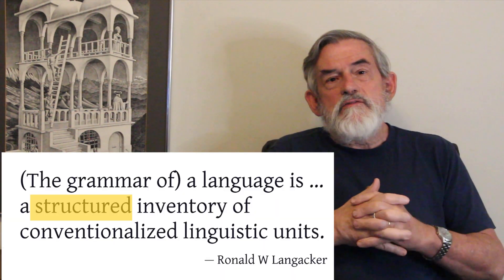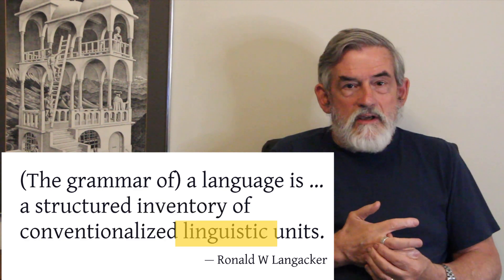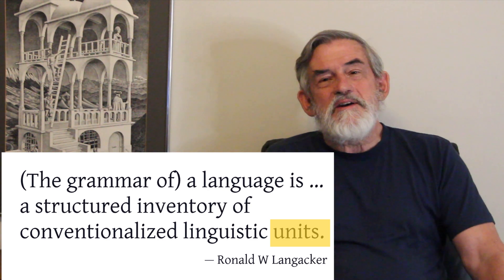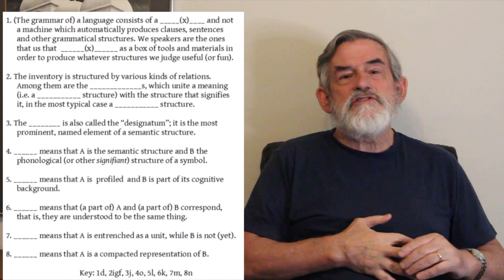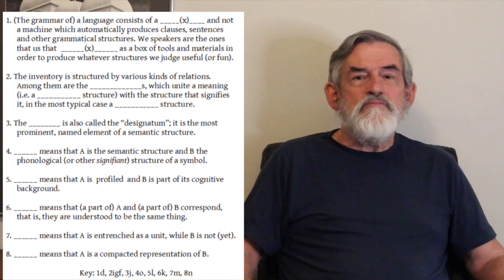All of these relationships — the relationships of association, of identity, of symbolization — structure the inventory. So a language is composed of a structured inventory of conventionalized linguistic units. I hope it's clearer now what the implications of that statement are. I'll say goodbye, and leave you with a list of vocabulary, a list of diagramming conventions, and a little quiz to make sure you've got them understood. We'll see you back for another session in this course of linguistics.